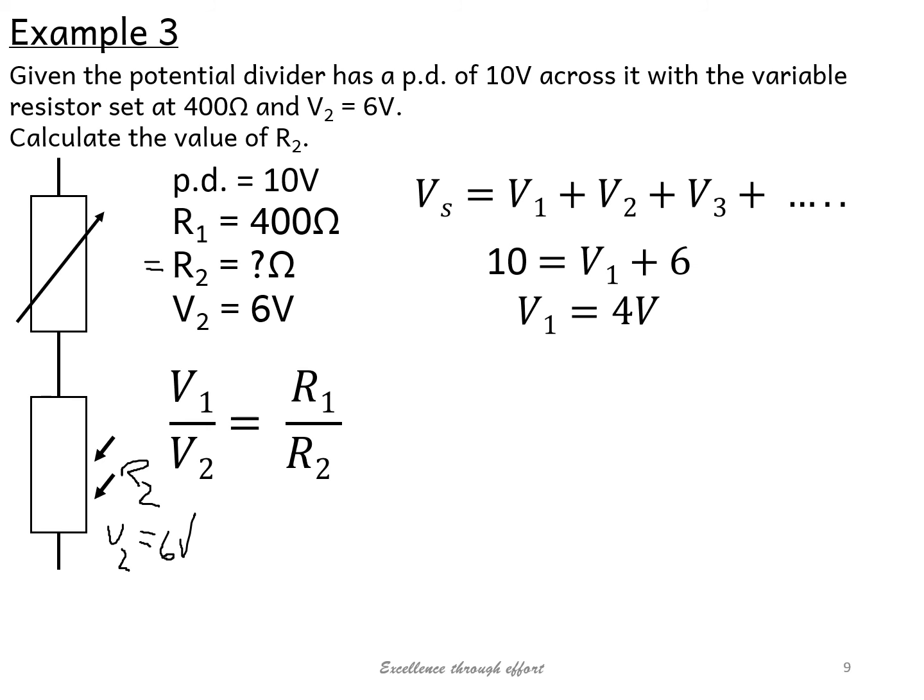The reason we do that is because we can use this relationship, which tells you how the voltage splits up across the two resistors. Because once we have this and we know what V1 is, you can hopefully see it's dead easy. We just plug in our numbers.